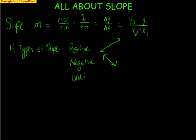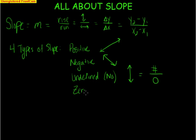We have undefined slope, sometimes also called no slope. Visually, this is a vertical line. When you apply the slope formula, you get some number on top when you subtract the y's, but you get 0 when you subtract the x's, because it has the same x-coordinate. Since we can't divide by 0, we say that's undefined or no slope. The last type is zero slope, which by process of elimination is the horizontal line. With zero slope, you get 0 on top and a different number on the bottom — 0 divided by any number is 0.